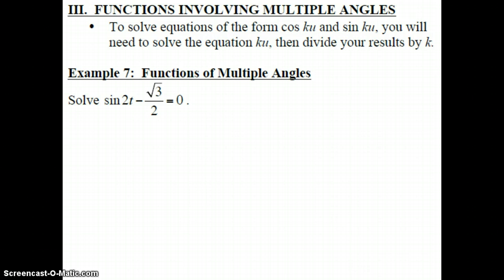So sometimes you're going to find that you have a number in front of your theta, or in this case a t. What you're going to do is solve the equation for the angle first, and then you're going to divide your results by k.